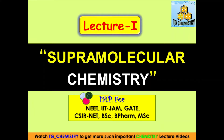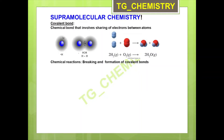Before moving directly to supramolecular chemistry, let's have a quick look at covalent bond chemistry. Covalent bonds involve the sharing of electrons between two atoms, as seen in the hydrogen molecule where sharing of one electron produces the molecule. Chemical reactions involve the breaking and formation of covalent bonds — for example, two hydrogen molecules reacting with one oxygen molecule to produce two molecules of water, shown here with the space-filling model.